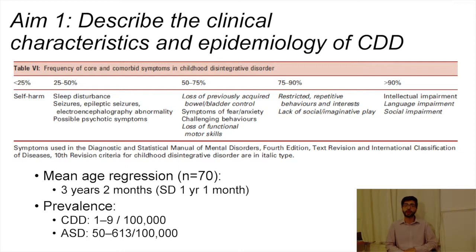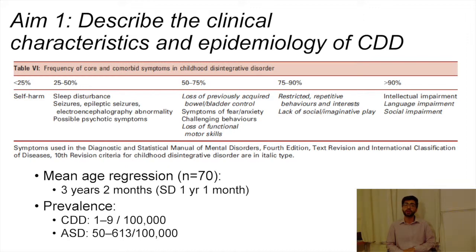Two-thirds of the participants had regression of adaptive skills. Importantly, several CDD participants shared features not in the diagnostic criteria — for example, they all had intellectual disability. In two-thirds of the participants, this was a severe to profound intellectual disability. One-third of the CDD participants had seizures. Most participants with CDD either experienced static disorder severity or overall improvement over the course of follow-up.